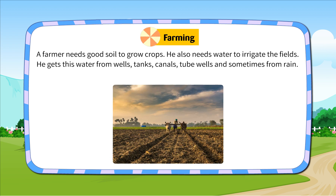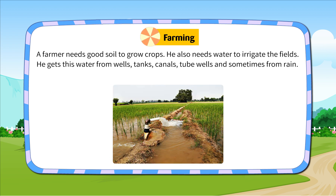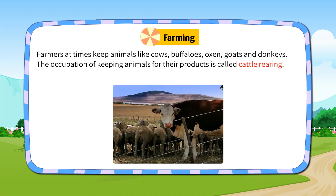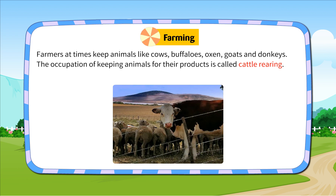A farmer needs good soil to grow crops. He also needs water to irrigate the fields. He gets this water from wells, tanks, canals, tube wells and sometimes from rain. Farmers at times keep animals like cows, buffaloes, oxen, goats and donkeys. The occupation of keeping animals for their products is called cattle rearing.